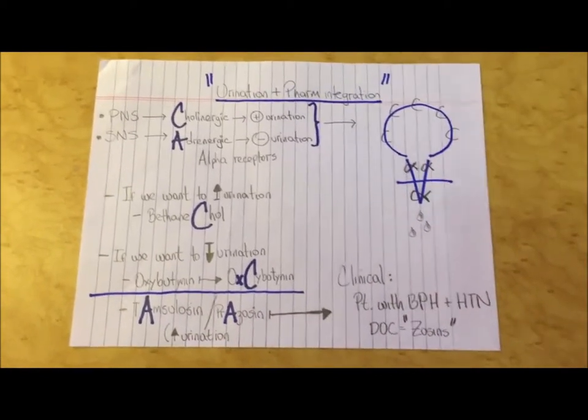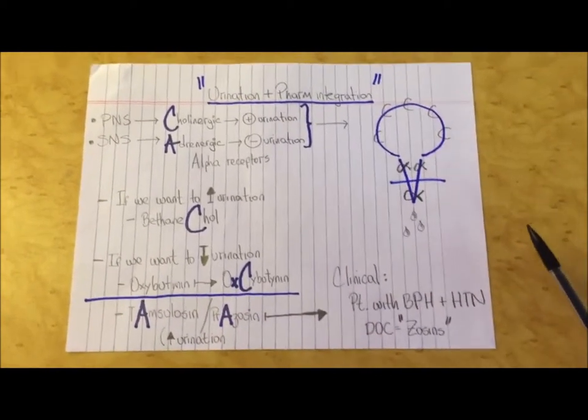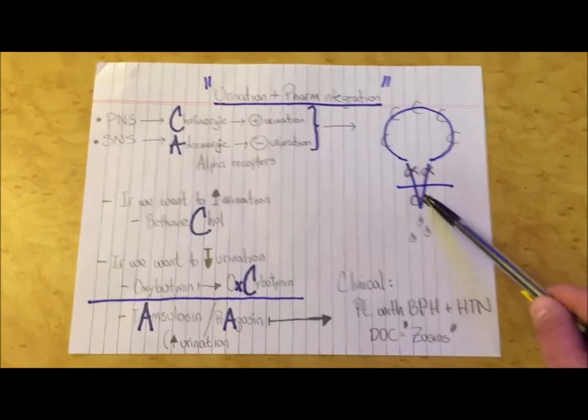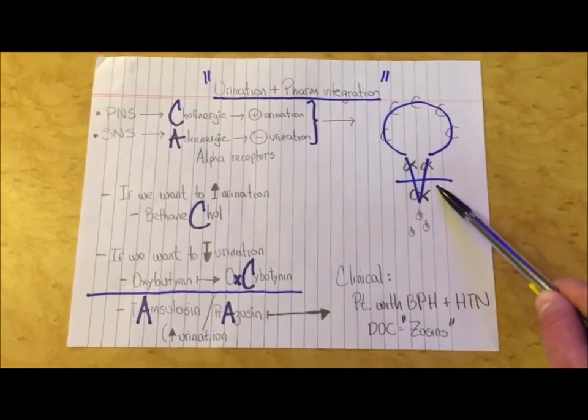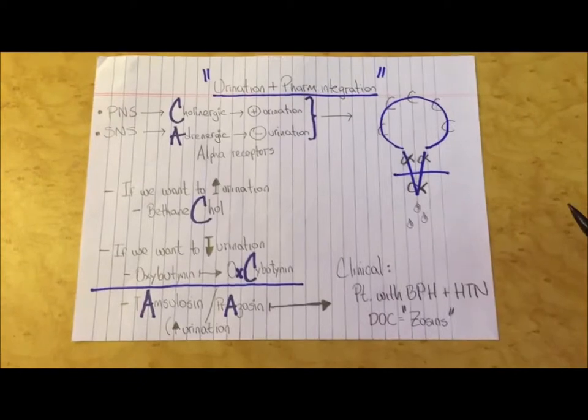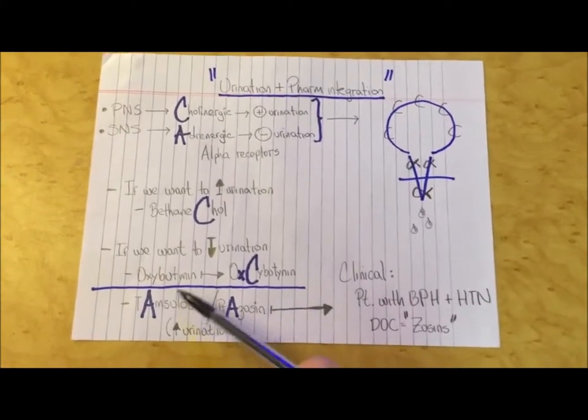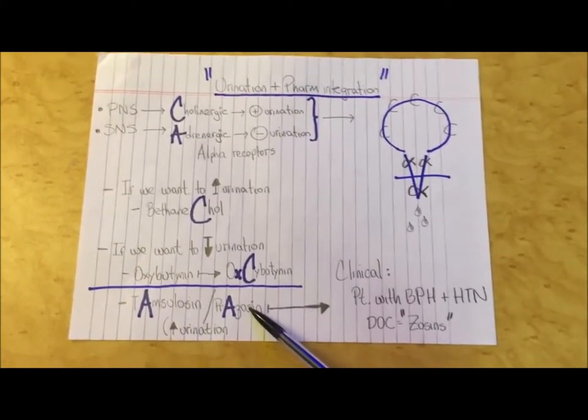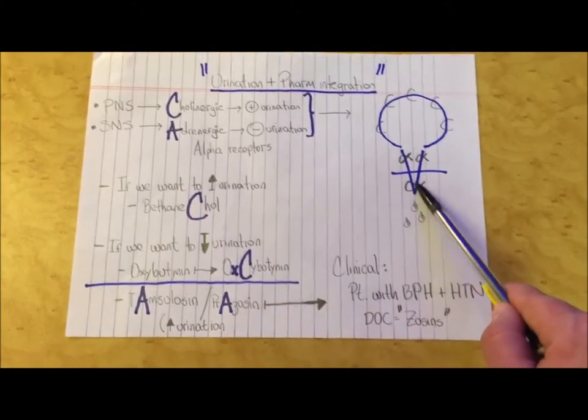We can also increase urination through the alpha receptors by blocking these receptors in the sphincter. Some examples of these drugs are tansulosin and prazosin, which increase urination by inhibiting the alpha receptors.